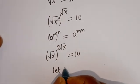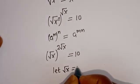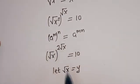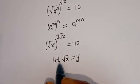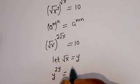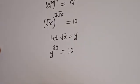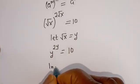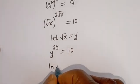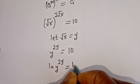Now let's let square root of s equal y. Now let's substitute here. We have y to the power of 2y is equal to 10. Let's take the natural log of both sides: ln of y to the power of 2y is equal to ln of 10.